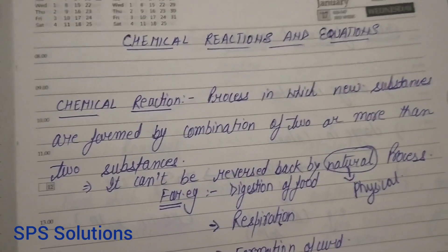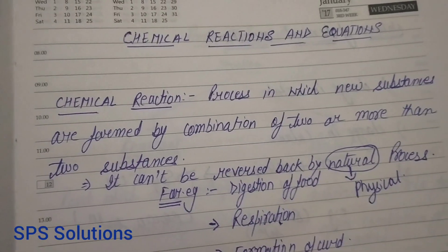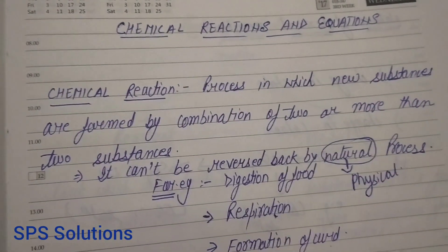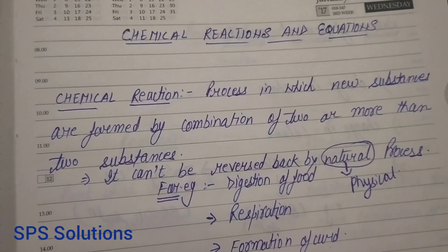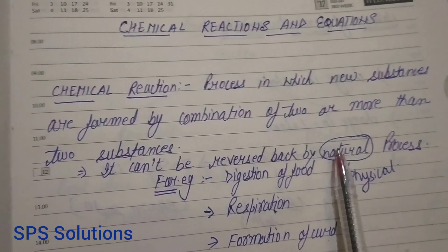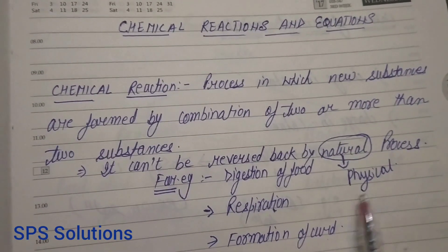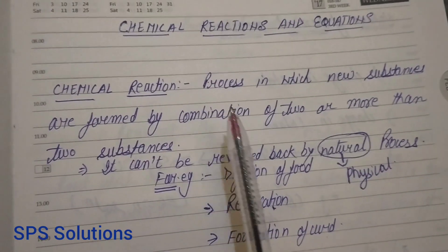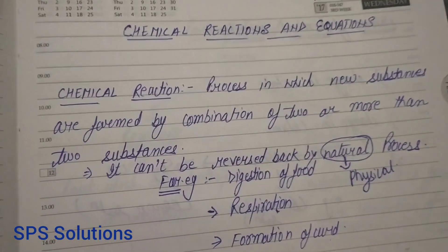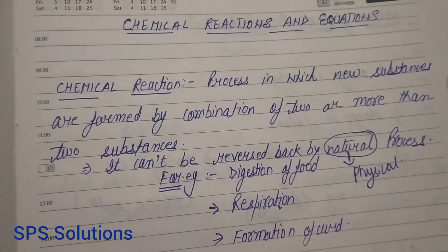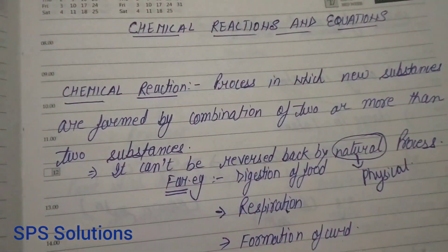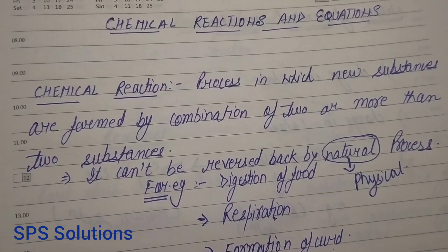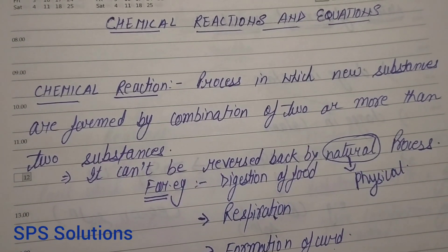Those reactions where there is chemical combination of at least two substances — the substances can be more than two, three, four, five, and so on. That process is called a chemical reaction. The special quality about the chemical reaction is it cannot be reversed back by physical processes — natural physical processes such as melting, freezing, or boiling. So this is the definition and the quality of chemical reaction: new substances are formed by combination of two or more substances, and it cannot be reversed back by physical processes.